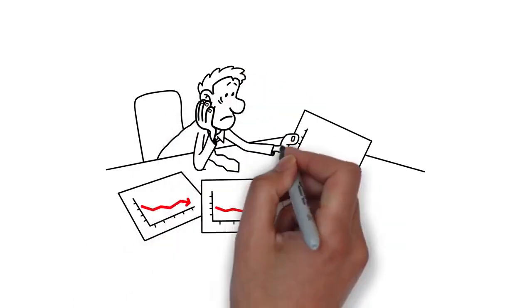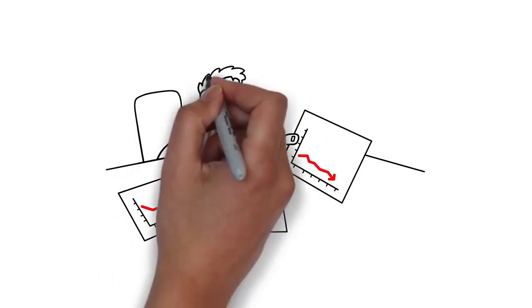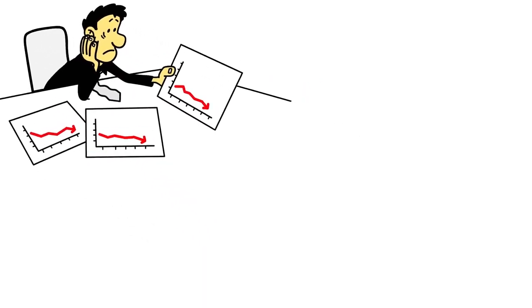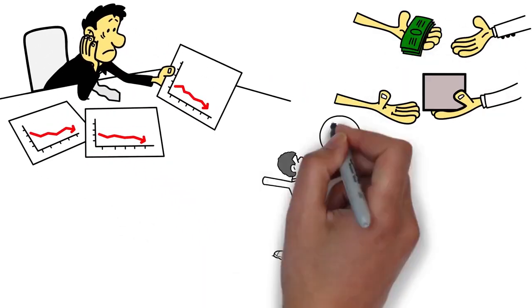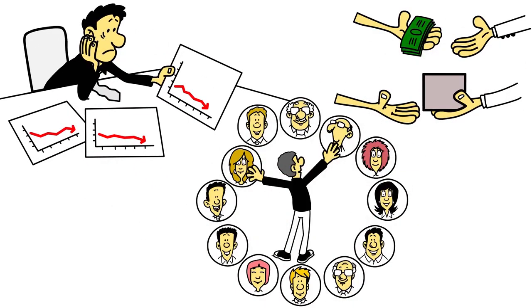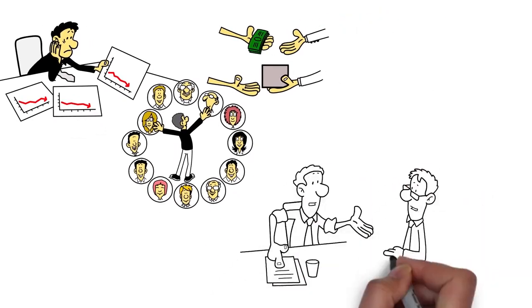Many companies are struggling today to increase the yield per account or territory. They need to cross-sell more and reach more buyer decision-makers. However, these strategies often represent a sales execution challenge.